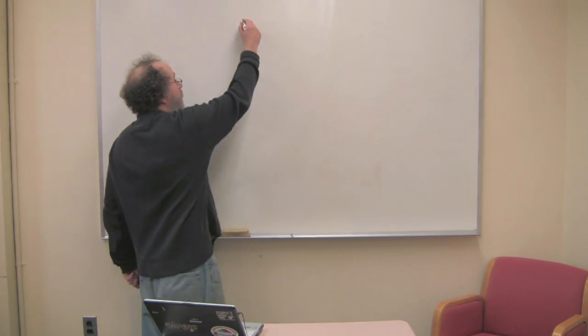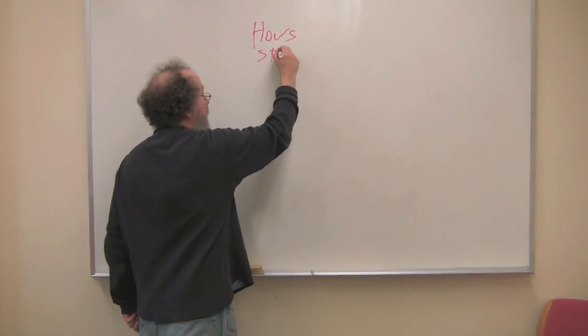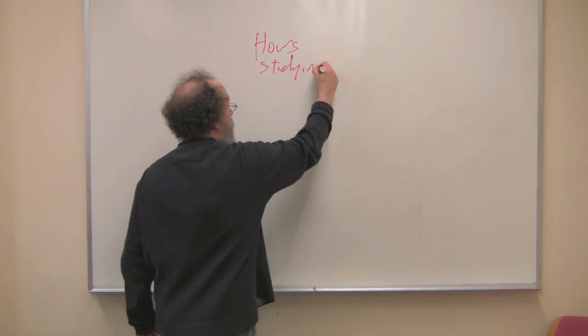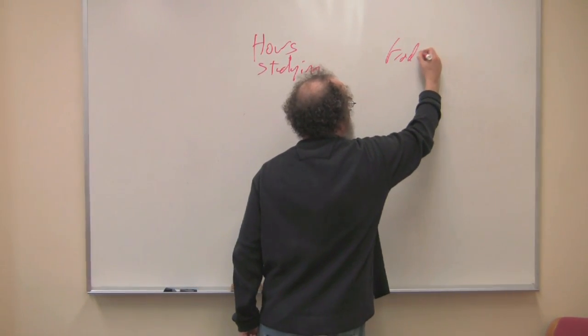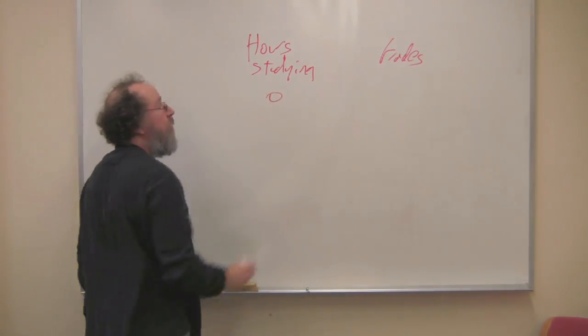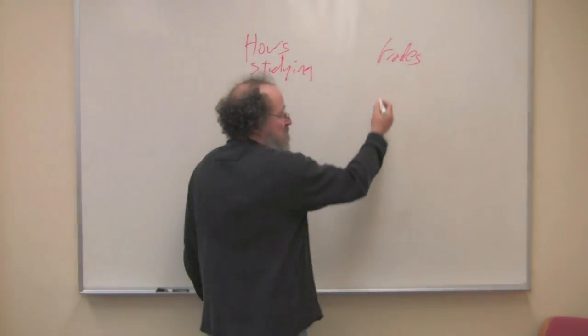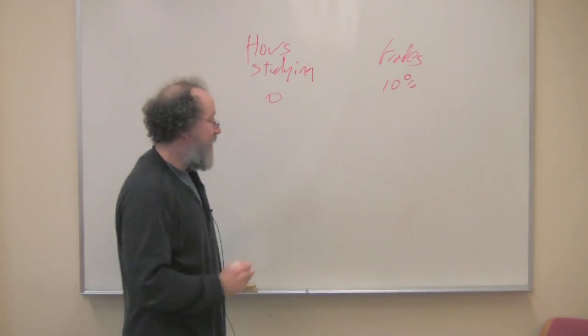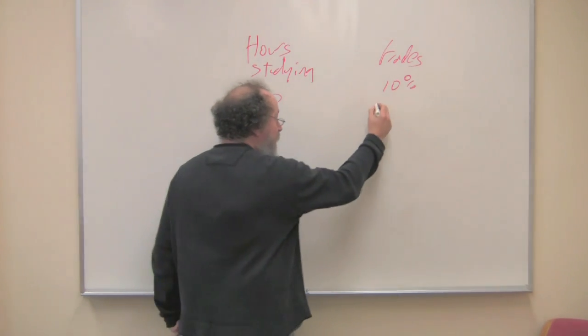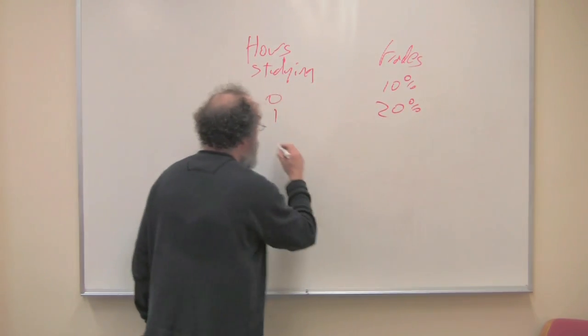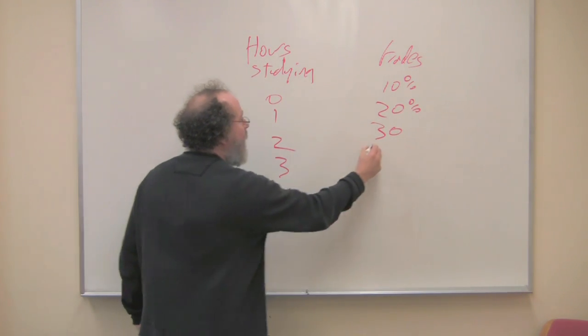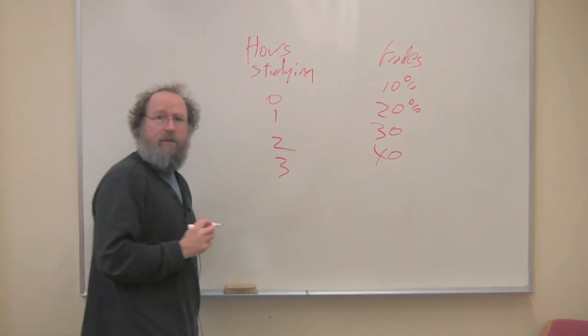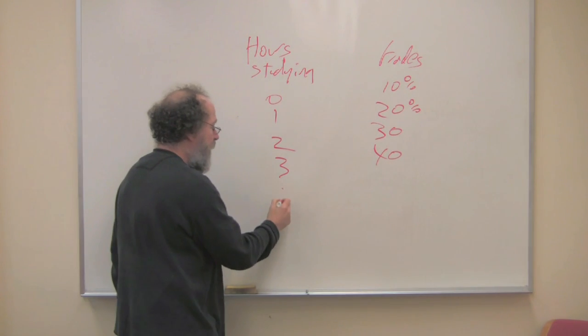It all starts with a table of numbers. For example, hours studying and grades. Zero, you get 10% right. Be warned, you need to study for this class. One hour, maybe you get 20% right. Two hours, 30. Three hours, 40. You see where this is going. So dot, dot, dot. Okay.